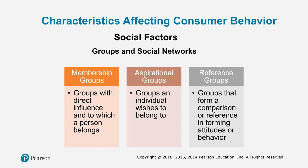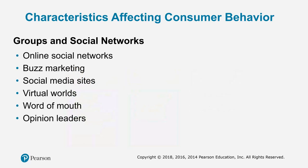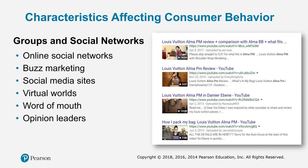Social factors are super critical. Who you're a member of, who you aspire to be a member of, and who your reference groups are — they all develop your attitudes and behaviors towards a certain product. With Louis Vuitton, it's more of an aspirational product, so they're going to use aspirational models and images to attract this premier market group that they're targeting. They focus on social networks and groups such as online social networks, buzz marketing, social media sites, and word of mouth and opinion leaders.